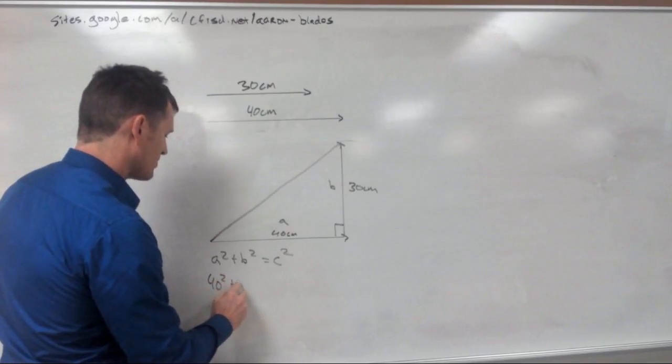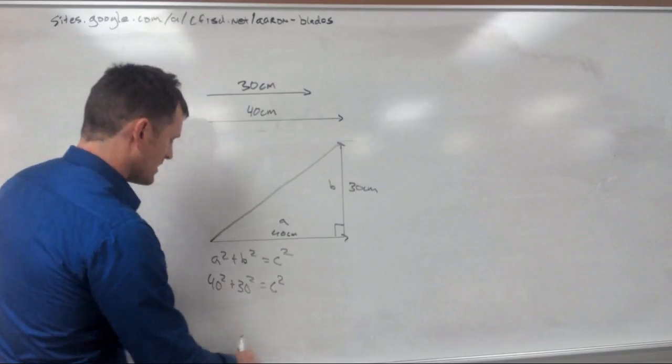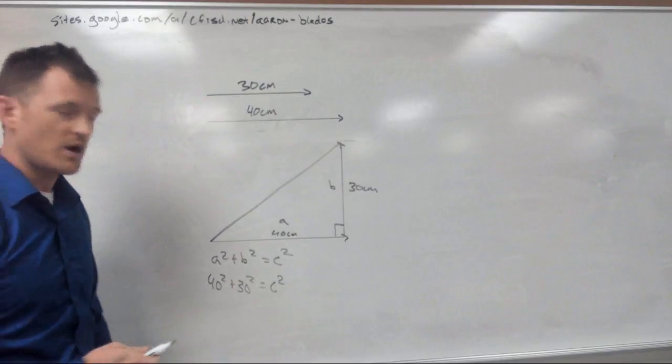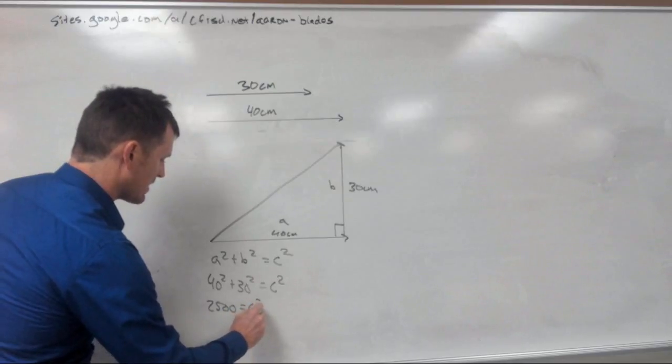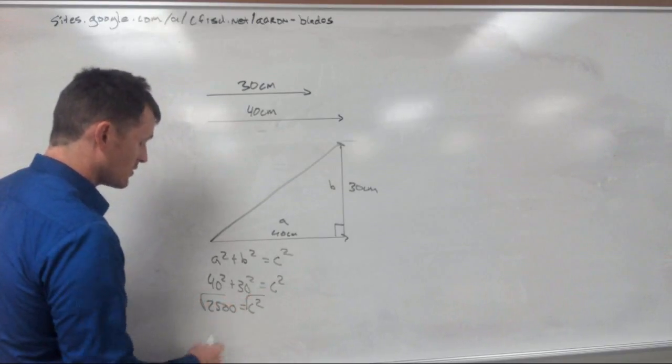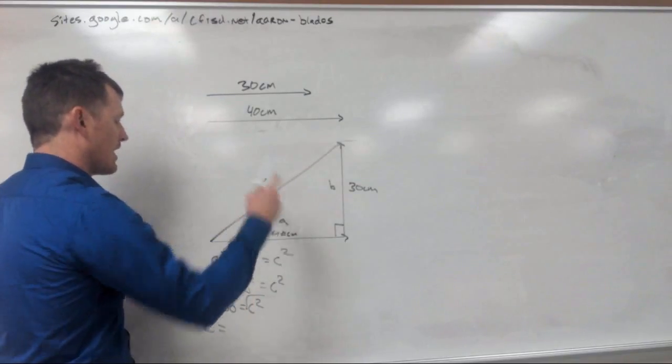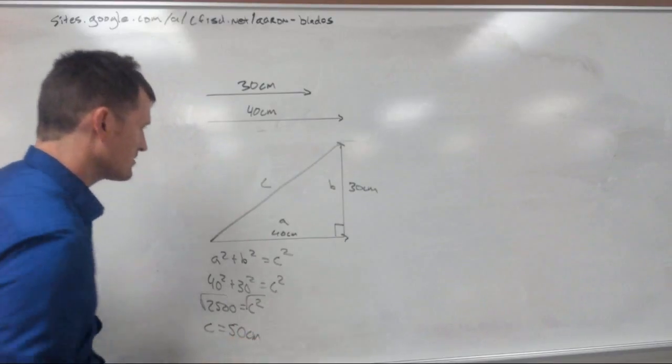So let's go ahead and plug in our numbers: 40 squared plus 30 squared equals C squared. Now, 40 squared plus 30 squared is equal to 2,500, and that's our C squared. Now, if we square root both sides, you'll see that our C, our hypotenuse, is 50 centimeters long.